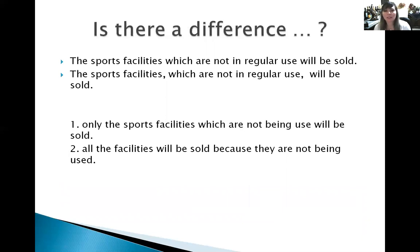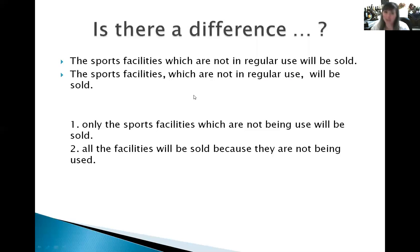I've written two sentences here — please look at them and tell me if there is a difference. First: 'The sports facilities which are not in regular use will be sold.' Second: 'The sports facilities, which are not in regular use, will be sold.' If you said yes, there are differences, you are right, because commas play a very important role in English grammar. The first sentence — without commas — means only the facilities that are not being used will be sold. In the second sentence, the part in commas can be removed, giving 'The sports facilities will be sold,' meaning all facilities will be sold because they are not being used.